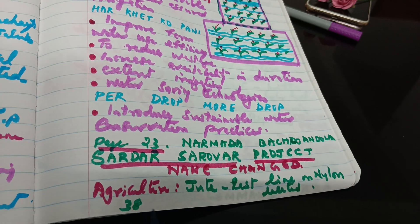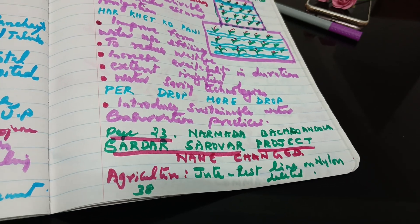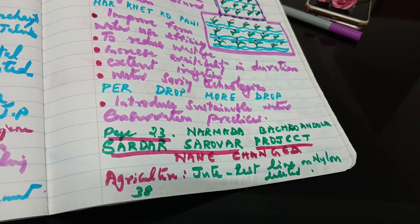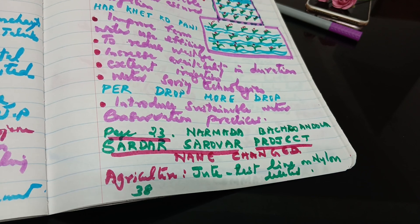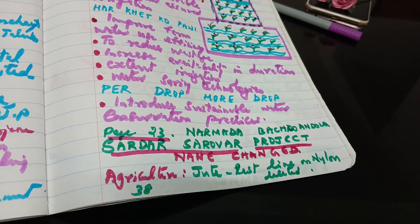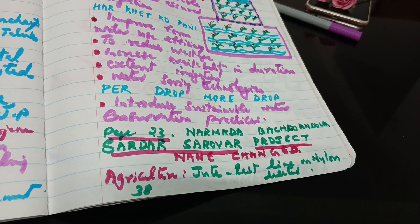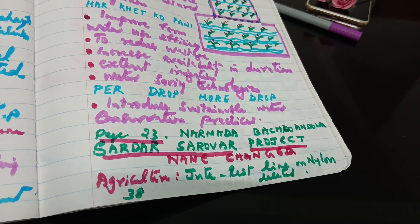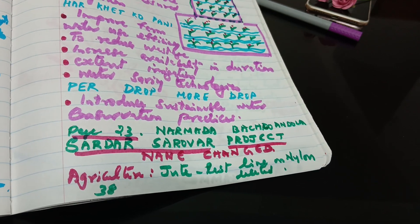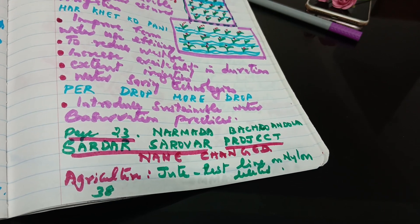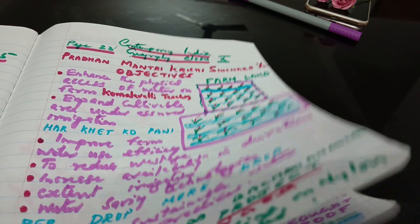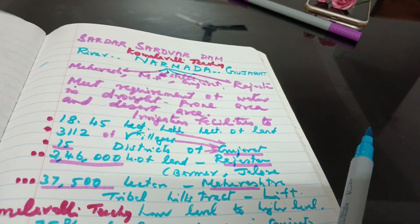Then, in the Agriculture chapter, page 38, a line at the end of a paragraph has been deleted and new content has been added.